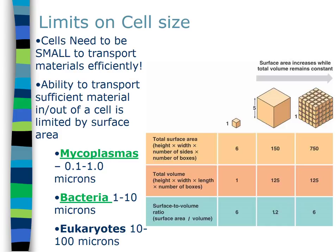The larger cell with five units on a side has a surface area of 150 (6 × 25) and a volume of 125 (5×5×5), giving a surface area to volume ratio of only 1.2. So that cell has only 1.2 doors per unit volume — far less efficient at moving things in and out. It also takes longer for materials to cross from one side to the other.